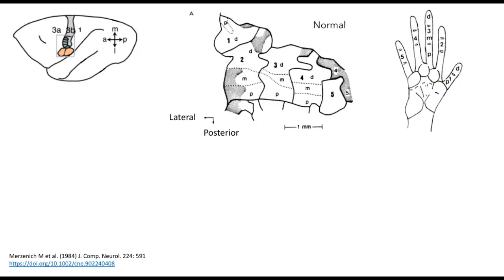The somatosensory cortex is one of the parts of the brain where plasticity, the ability to change with experience, has been extensively studied. I want to close by talking a little bit about that. I'm going to show you data from one experiment by Merzenich and his colleagues.